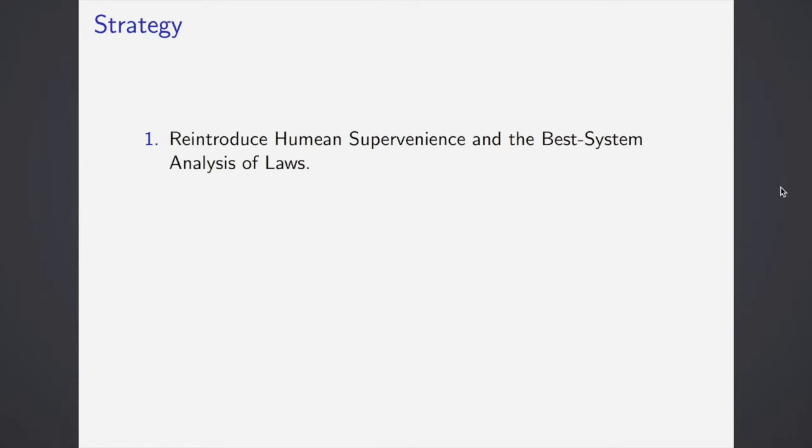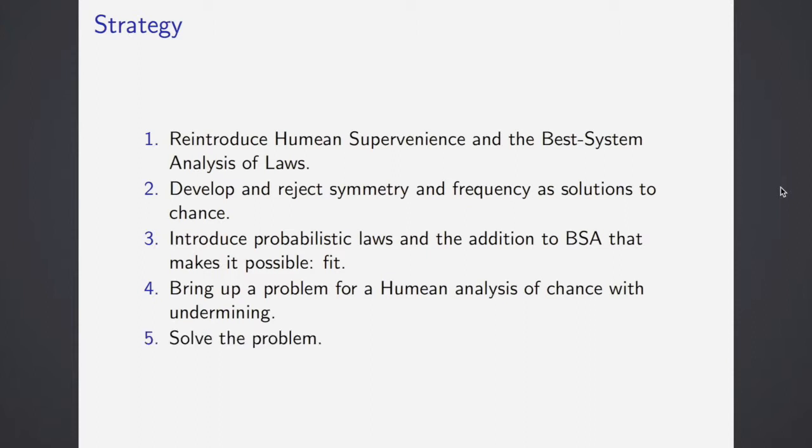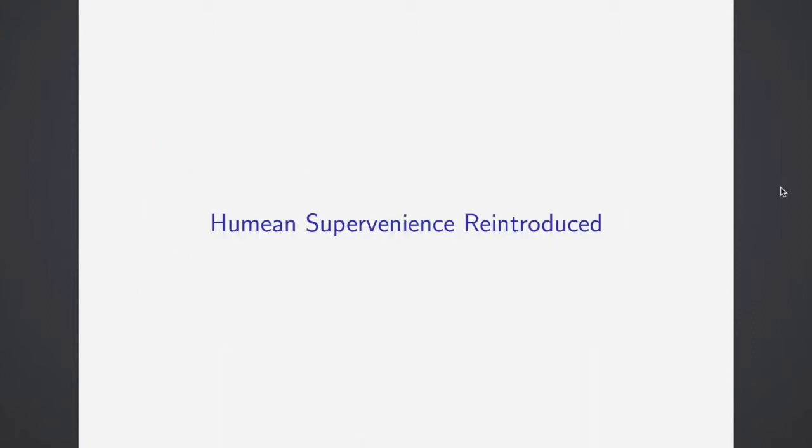How does he do this? First he reintroduces Humean supervenience and the best system analysis of laws. Then he develops two candidates for how he might explain chance, subsequently rejects them. He introduces probabilistic laws into his best systems analysis of laws, and what makes this possible is his notion of fit. He brings up a problem, preempts an objection to the view with what he calls undermining, and he solves it.